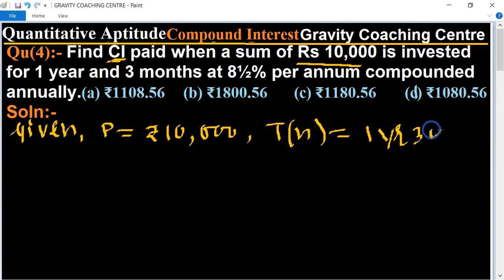1 year 3 months = 1 + 3/12 years. 3/12 simplifies to 1/4, so the time is 1 and 1/4 years.